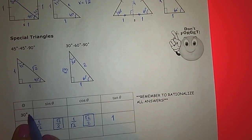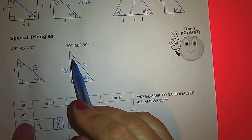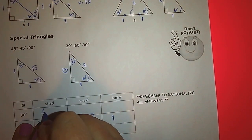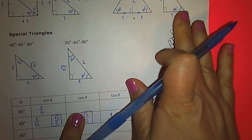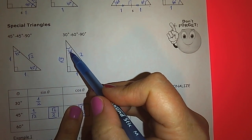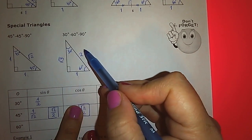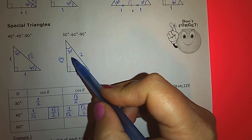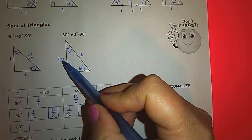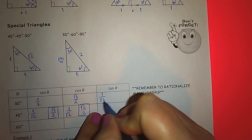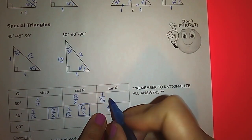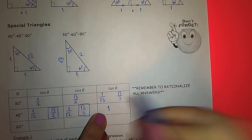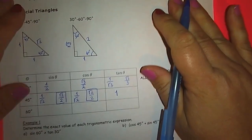Let's look at sine 30 degree. 30 degree is here; sine is opposite over hypotenuse, so it is one over two. Now cosine of 30 degree: cosine is adjacent over hypotenuse. Adjacent is root 3, hypotenuse is two, so root 3 over 2. Tangent is opposite over adjacent: opposite is one, adjacent is root 3, so one over root 3. Let's rationalize the denominator — multiply by root 3 over root 3 — so we end up with root 3 over 3.